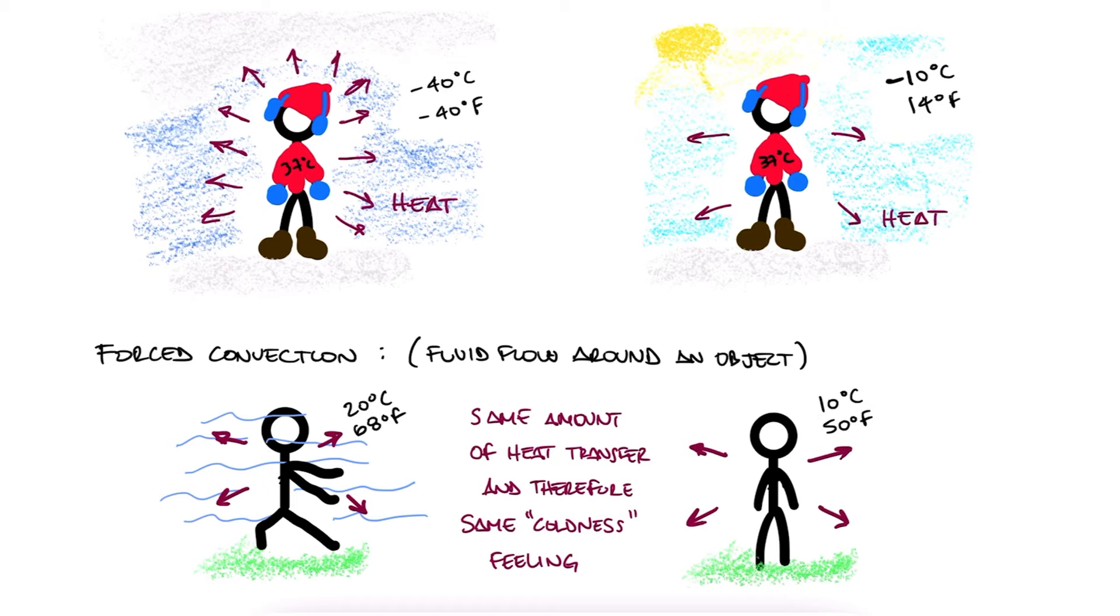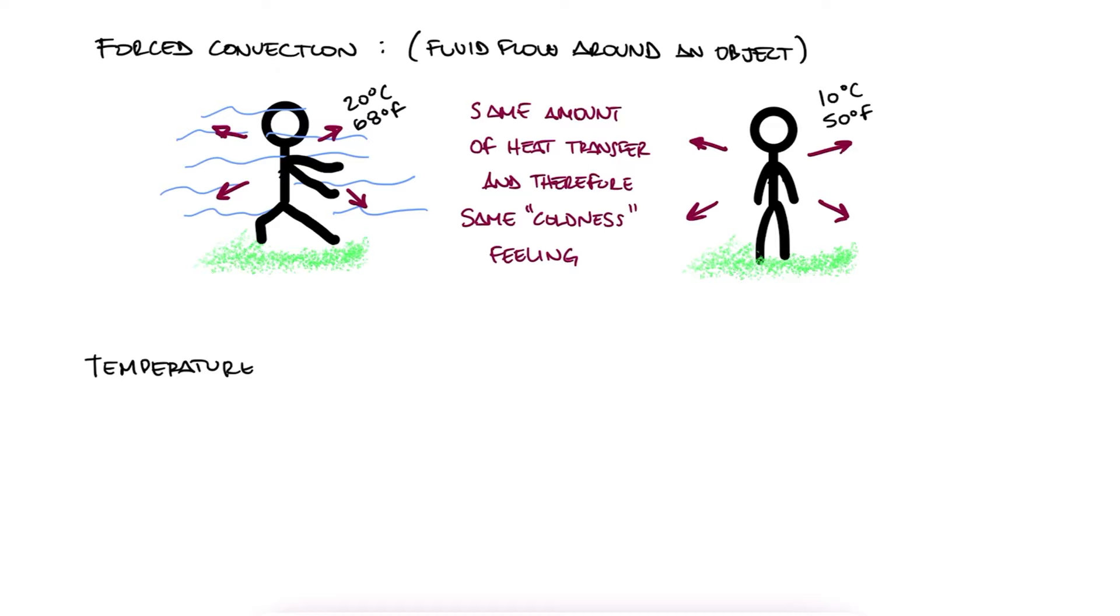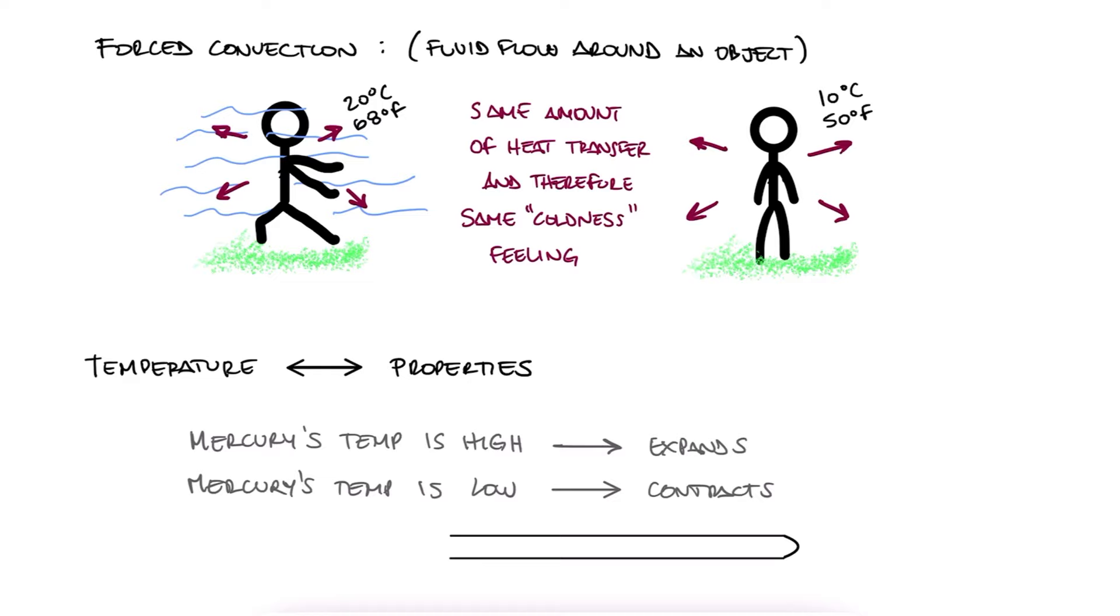Luckily, many properties of materials and substances change with temperature in a repeatable and predictable way. And this is our basis for accurate temperature measurement. For example, the expansion of a metal like mercury, which is how older thermometers worked.